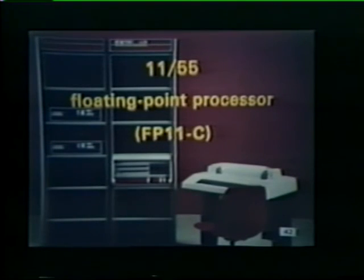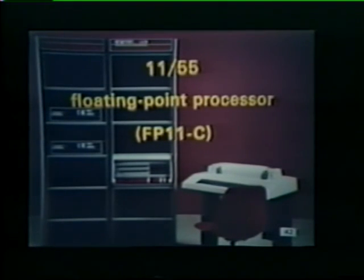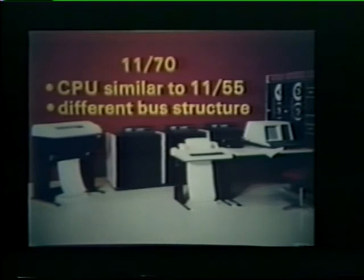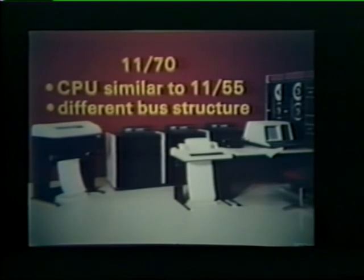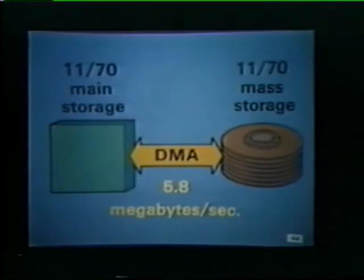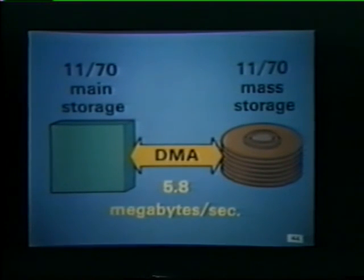The 1155 is designed to accommodate a very fast floating point processor option called the FP-11C. Thus, the design of the 1155 is optimized for extremely high-speed number crunching applications. The CPU used in the 1170 system is similar to the 1155 central processor. However, the 1170's bus structure is redesigned to effectively triple system throughput. With this redesigned bus structure, DMA transfer rates of up to 5.8 megabytes per second are possible in the 1170 system.